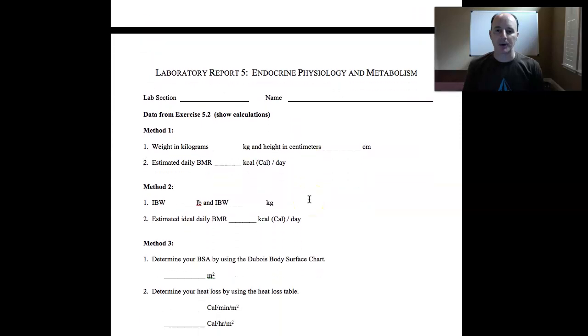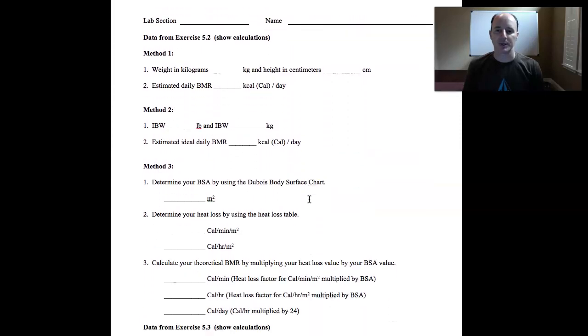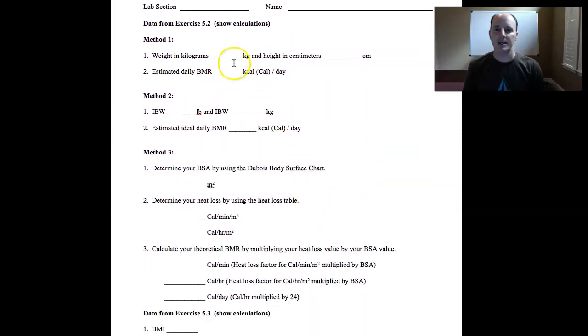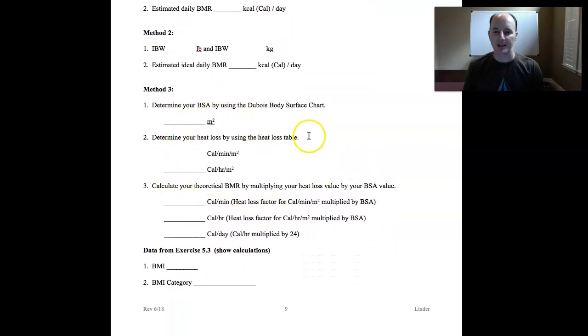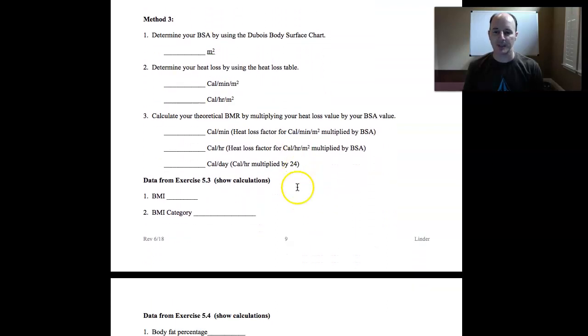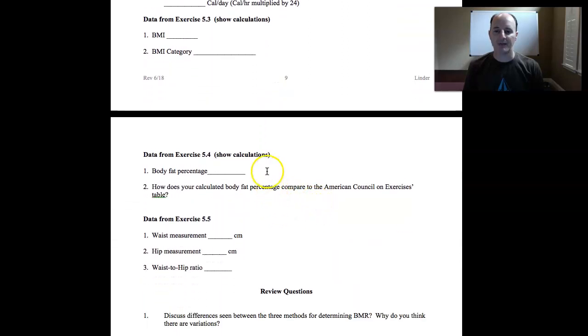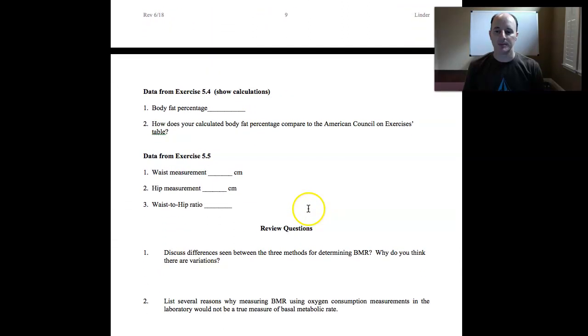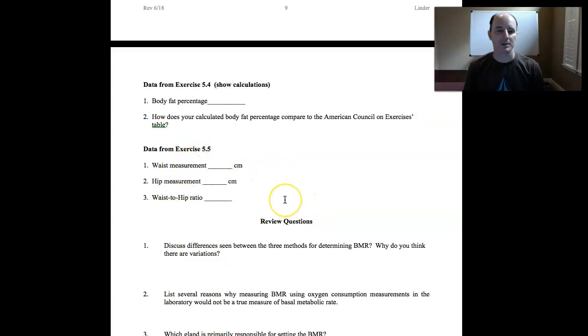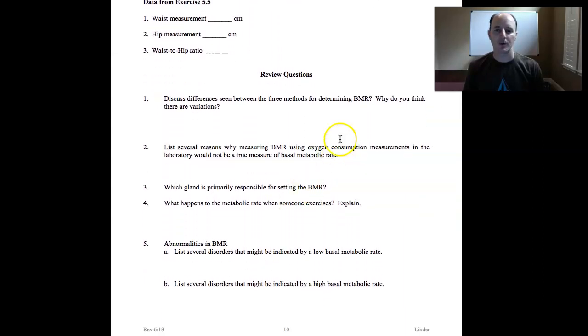Your lab report then looks like this. And this is where you're going to fill in all of your data. So method one calculation goes here. Method two calculation goes here. Method three calculation goes down here. BMI calculation goes here. Body fat percentage goes here. Waist to hip ratio goes here. And then you have five review questions to finish up this portion of laboratory five.